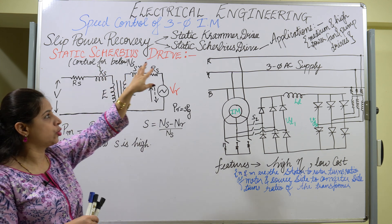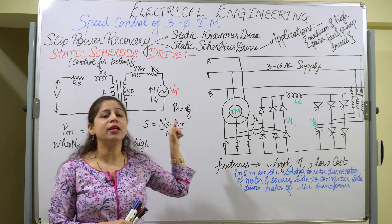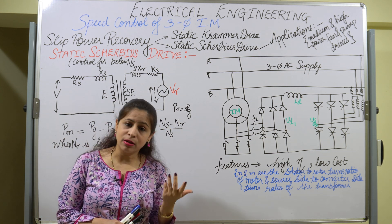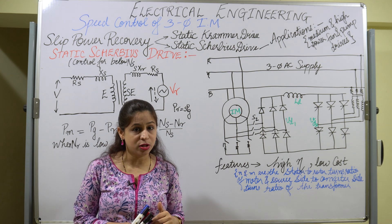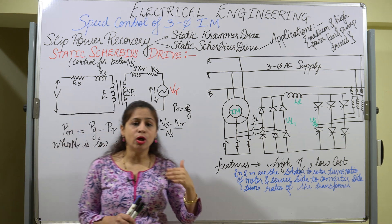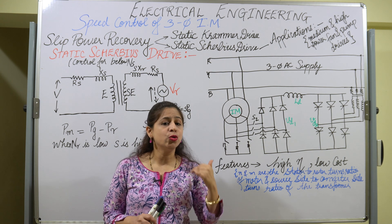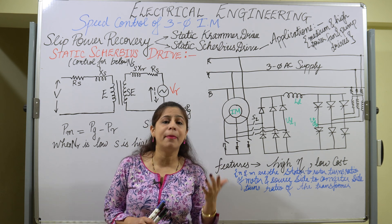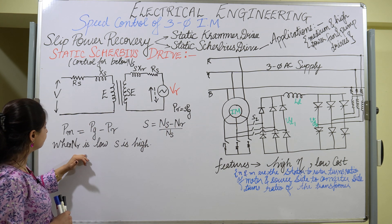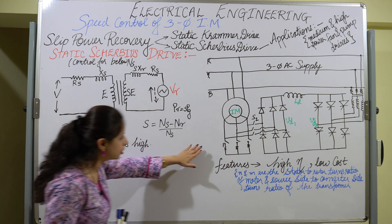In the slip power recovery method, there are two drive methods. The first is the static Kramer drive and the second is the static Scherbius drive. In the static Scherbius drive we can control speed below the synchronous speed, while in the static Kramer drive it is used to do speed control above the synchronous speed.